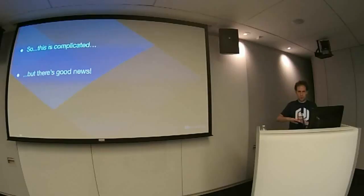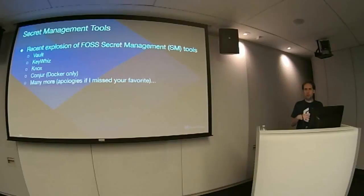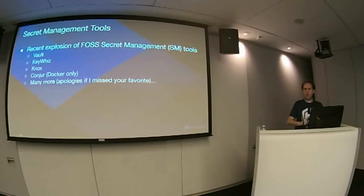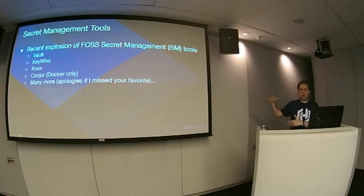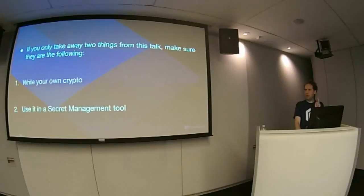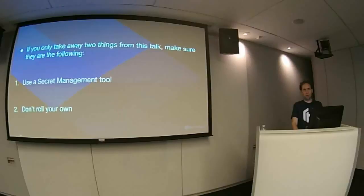The good news is there's been an explosion of open source secret management tools — Vault, which I work on, KeyWhiz from Square, Knox, Conjure. There are many more, some very small in scope or dedicated to AWS secrets. If you only take away two things from this talk, make sure they are: one, don't write your own crypto, and two, use a secret management tool. Never do either of those things — don't write your own crypto and don't roll your own secret management tool. Use one that exists. It's harder than you think.